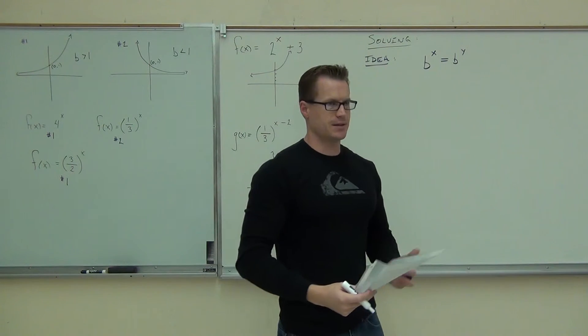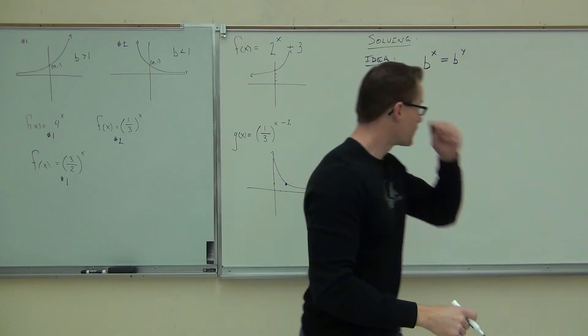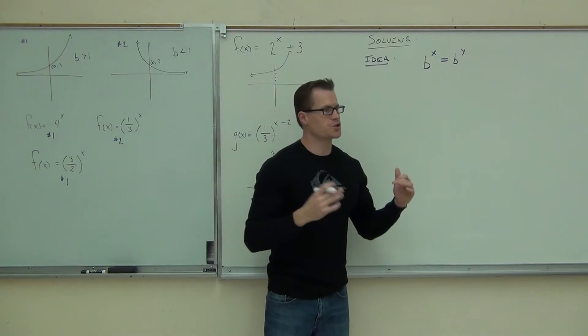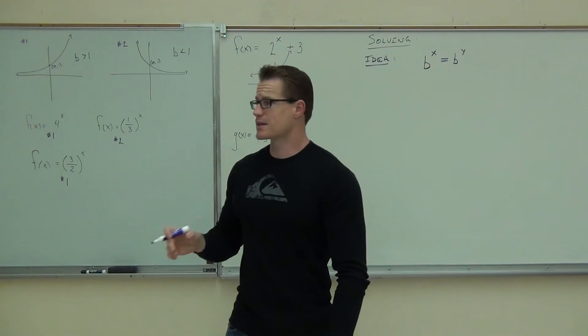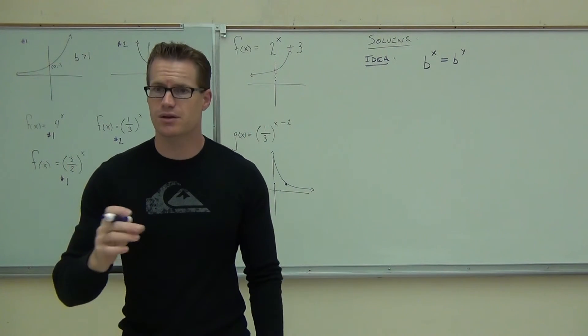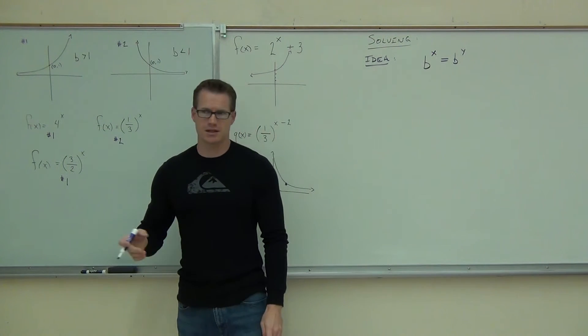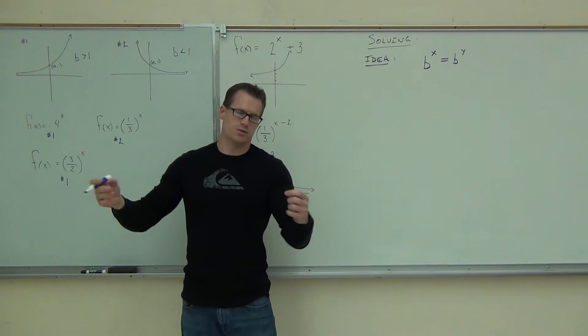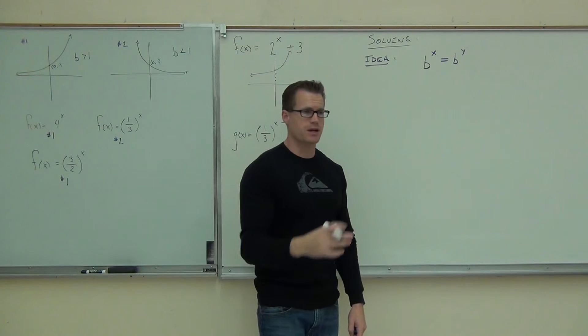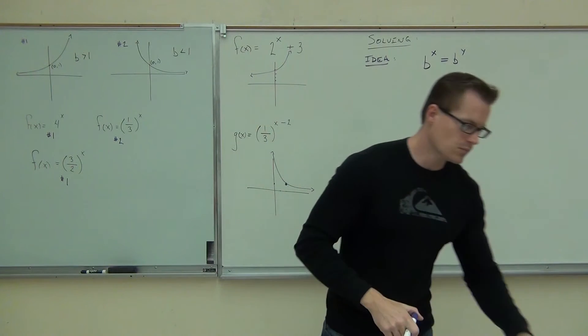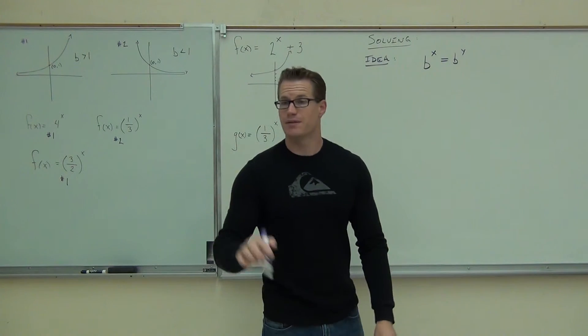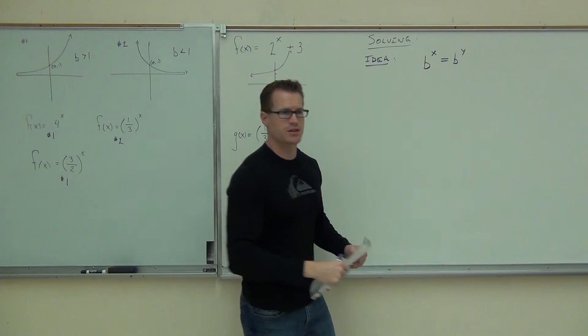Here's the idea of solving these exponentials. Here's the idea. I want you to assume that we have b to the x equals b to the y. So, basically, our bases are identical. The bases are the same. Are you with me on this? First, can you see it's an equation? Yeah. We get an equal sign. Great. Can you see the bases are the same? If the bases are the same, what do you know about the exponents?